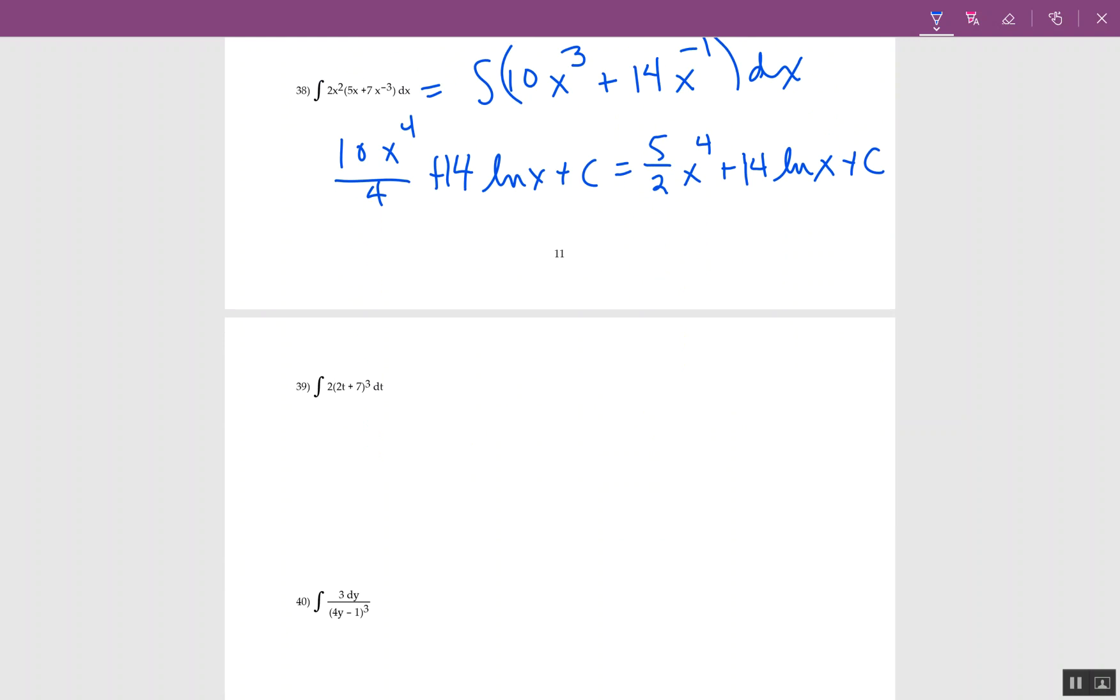If you compare 38 to 39, the big difference is the parenthesis has a power, so this one is substitution. The thing in the parenthesis is my u. So u equals 2t plus 7, derivative is 2 dt, and that's exactly what I have. When I replace this, I have u cubed du. The 2t plus 7 is u, the 2 dt is du, so everything is taken care of.